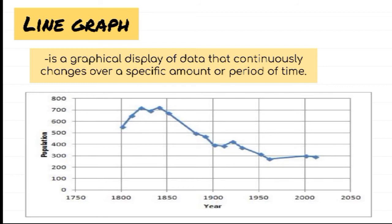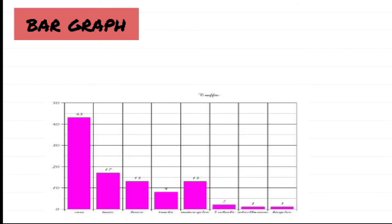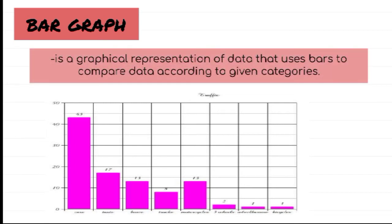Another example is the bar graph, also known as bar chart or bar diagram. It is a graphical representation of data that uses bars to compare data according to given categories. Such bars may run either vertically or horizontally.